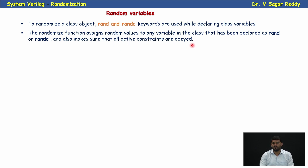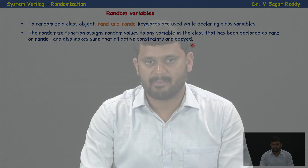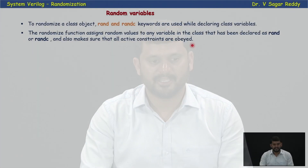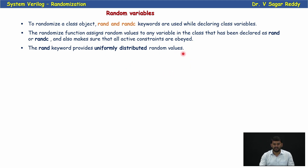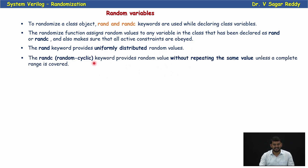If you want to make a variable randomized, declare it with a rand or randc modifier and make sure all active constraints are covered. The rand keyword provides uniformly distributed random values, whereas the randc keyword provides random values without repeating the same value unless a complete range is covered.